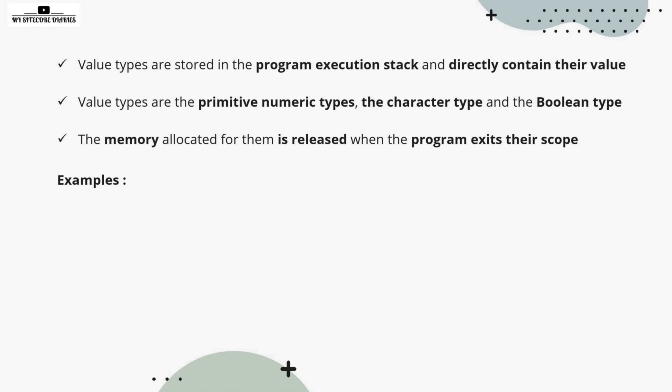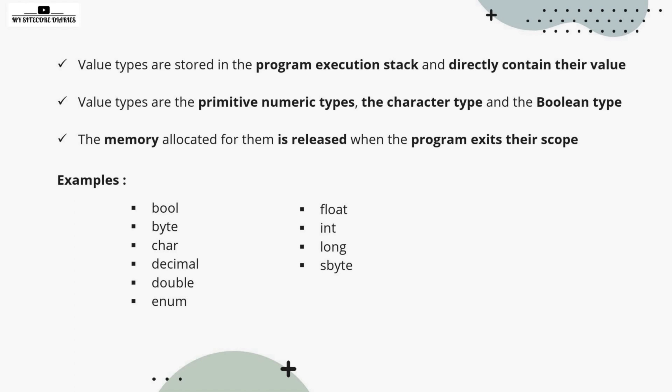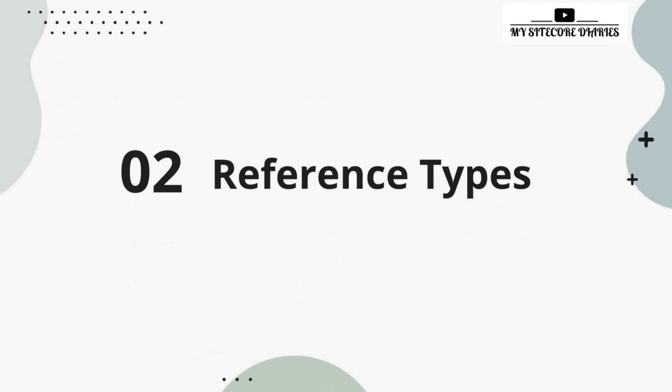Examples of value types are: bool, byte, char, decimal, double, enum, float, int, long, sbyte, short, struct, uint, and ulong. So remember that primitive numeric types, character types, and boolean types are all value types, and their values are directly stored in memory. Now let's see what reference types are.